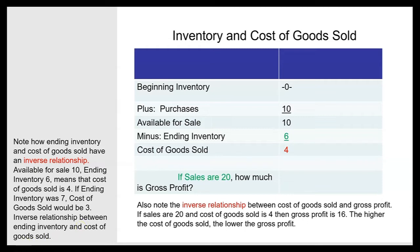There's an inverse relationship between ending inventory and cost of goods sold. As ending inventory goes up, cost of goods sold goes down. And as cost of goods sold goes down, gross profit goes up — so there's also a direct relationship between ending inventory and gross profit. If ending inventory was seven instead of six, cost of goods sold would be three instead of four, and gross profit would be 17 instead of 16, assuming sales are constant at 20.